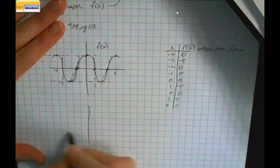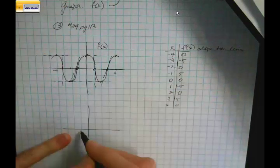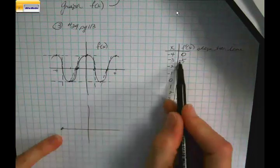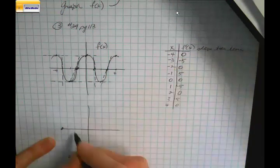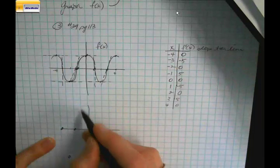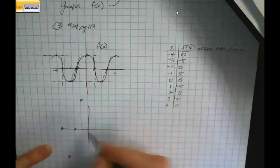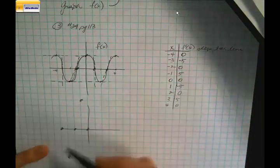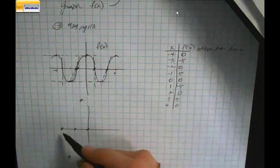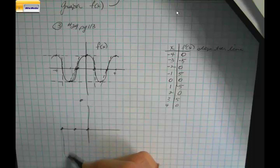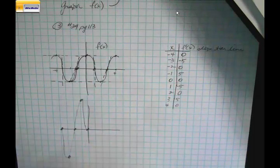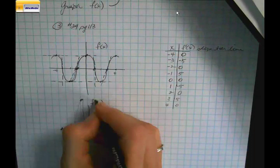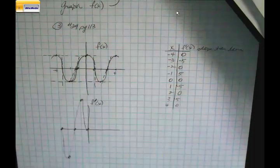Now let's graph the first derivative function. When x = -4, y = 0. When x = -3, y = -5. When x = -2, y = 0. When x = -1, y = 5. When x = 0, y = 0. So far it looks like a rolling wave. This is f-prime — be certain you're getting that prime on the f.